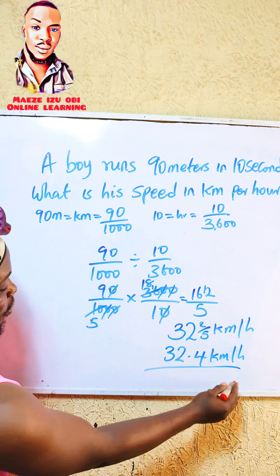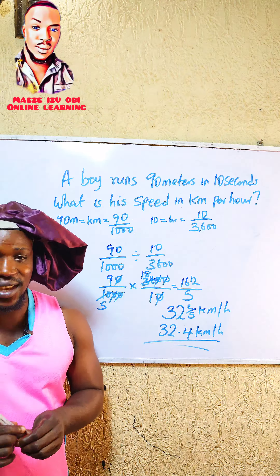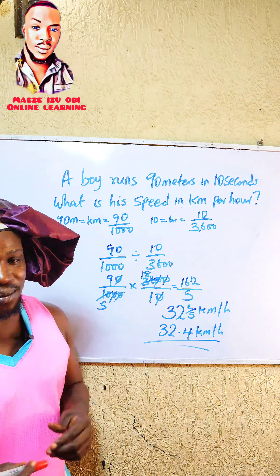After simplifying, we get 162 over 5. This is an improper fraction, so we convert it: 5 goes into 162 giving us 32 remainder 2, so the result is 32 and 2 over 5 kilometers per hour. You can also convert 2 over 5 to a decimal, which gives you 32.4 kilometers per hour.